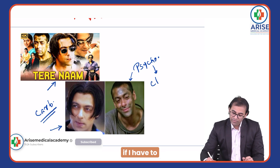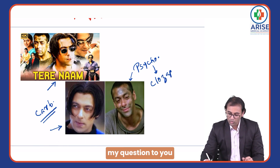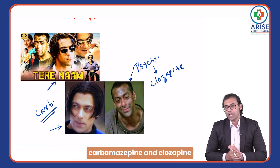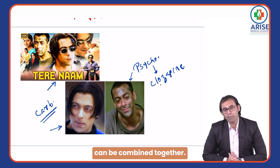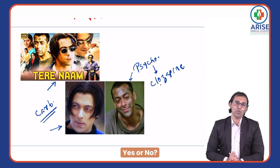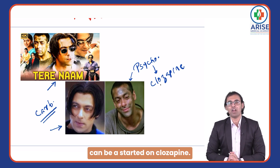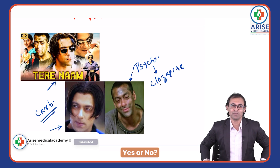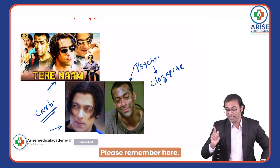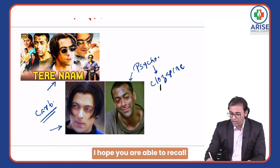After the interval, when Salman Khan started having schizophrenia-like symptoms, suppose I need to start him on clozapine. My question: can carbamazepine and clozapine be combined together? Salman Khan, who was already on carbamazepine — can he be started on clozapine? Yes or no? What is your answer?